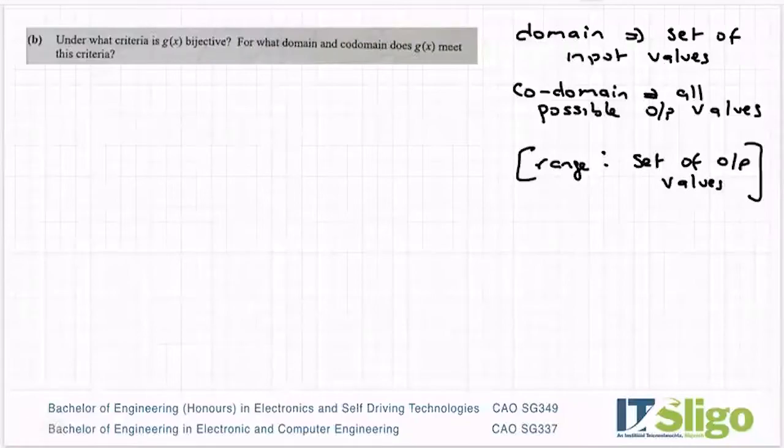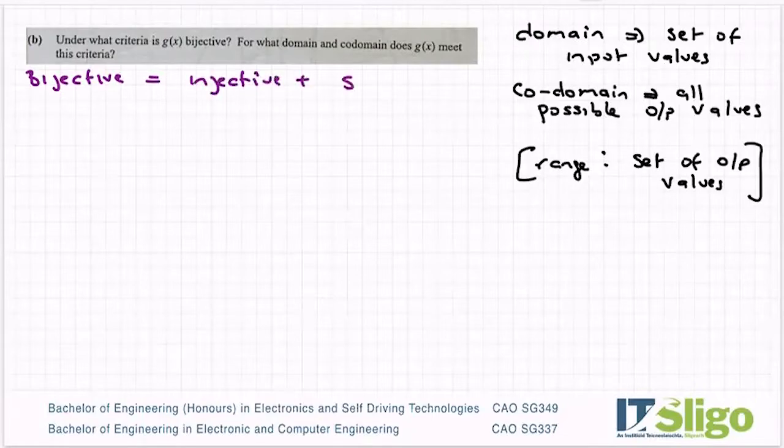How do we make this function be bijective? The first thing I'm going to write down is bijective equals injective plus surjective, because that's how you prove something is bijective. We've already said it's injective, so now we need to look at how do we make this be surjective.